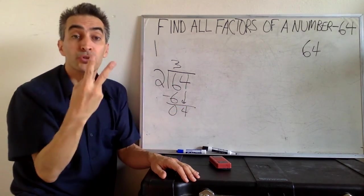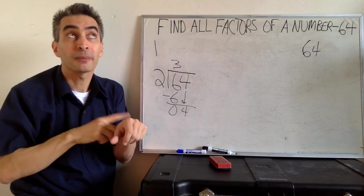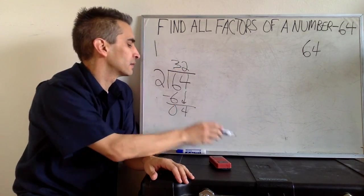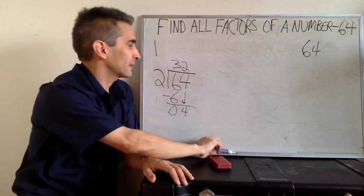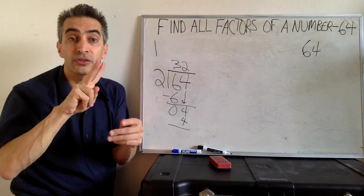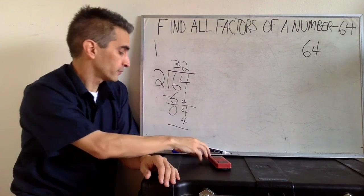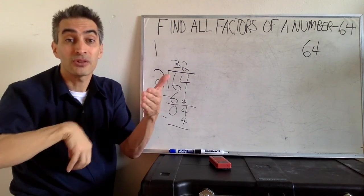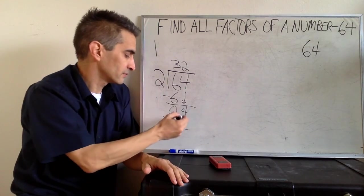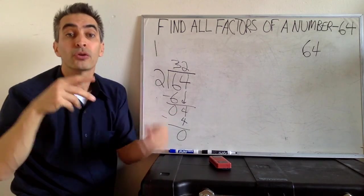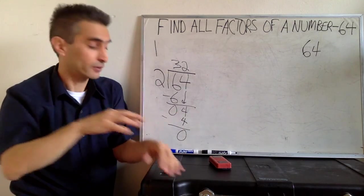Subtract. 2 goes into 4. How many times? 2 times. Right. 2 times 2 is 4. We subtract. Now 2 times 32 equals 64.